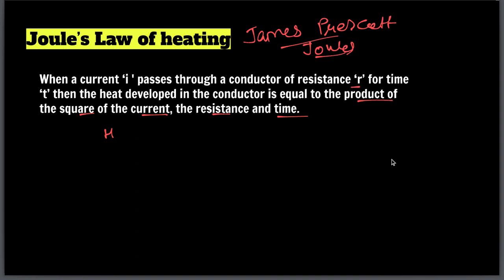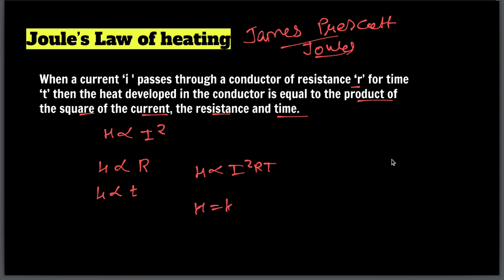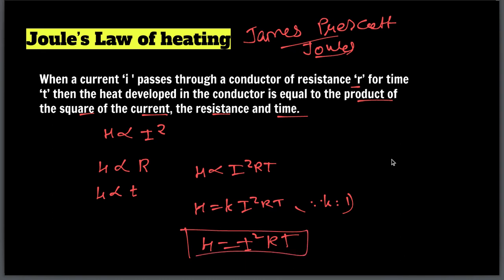There are two ways to get the equation. The first way: heat is directly proportional to current squared; heat is directly proportional to resistance; and heat is directly proportional to time. Combining these: H ∝ I²RT. Adding the constant k, H = kI²RT, and the value of k is 1. Therefore H = I²RT — this is Joule's Law of Heating formula.